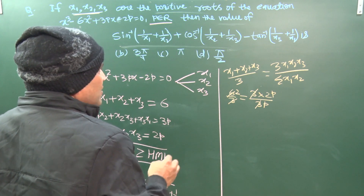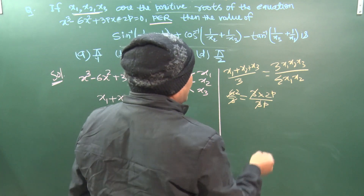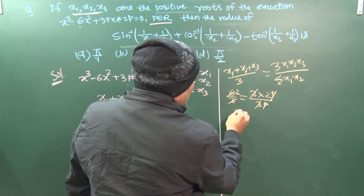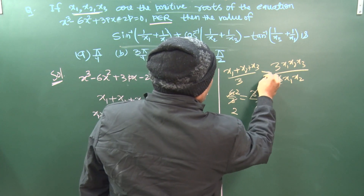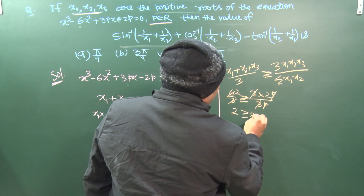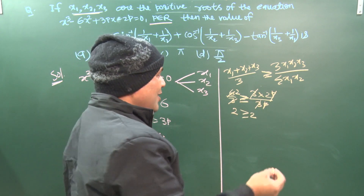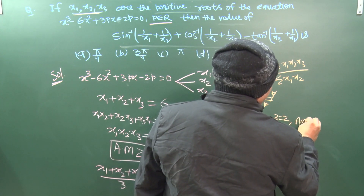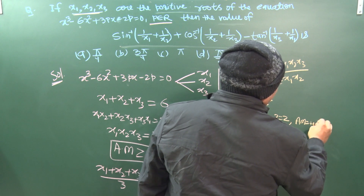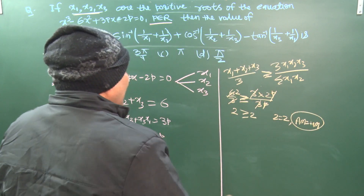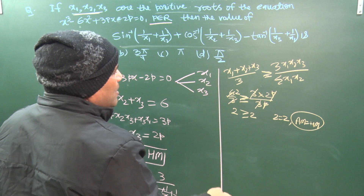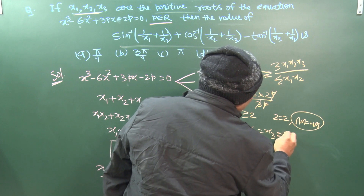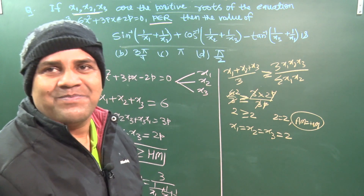Since AM ≥ HM and we got 2 = 2, the equality condition holds. When arithmetic mean equals harmonic mean, all terms must be equal. Therefore x1 = x2 = x3 = 2.